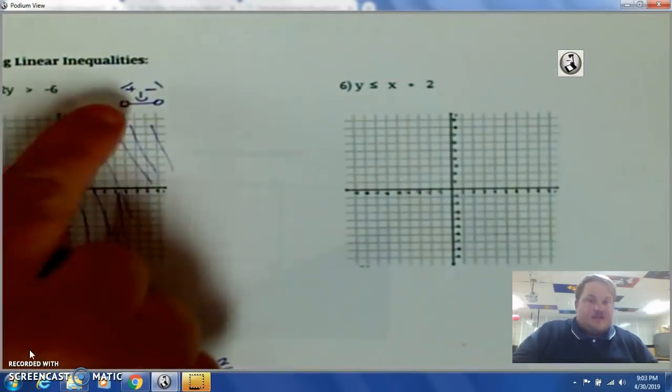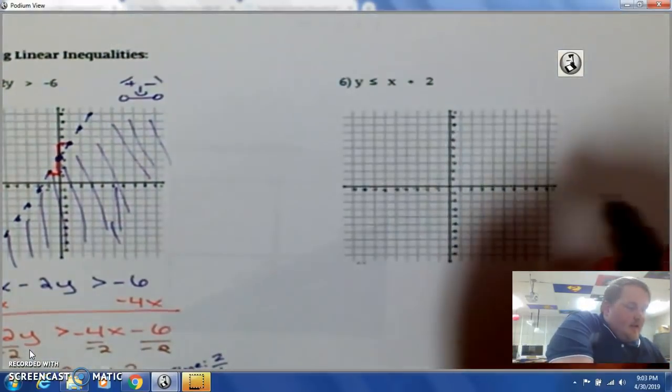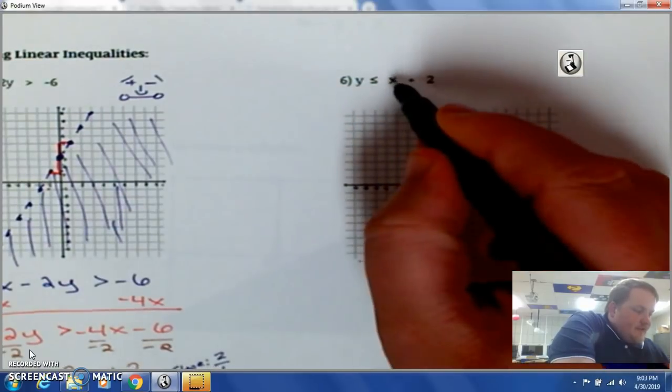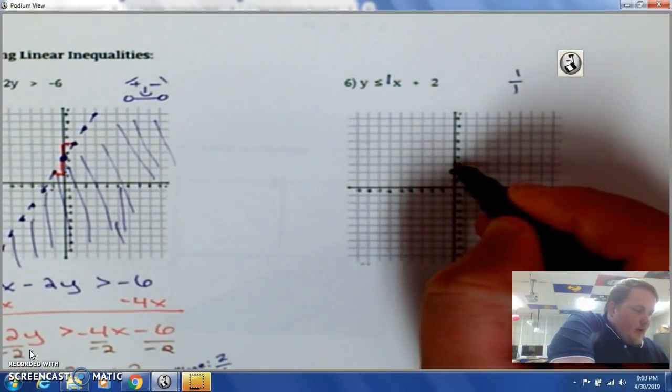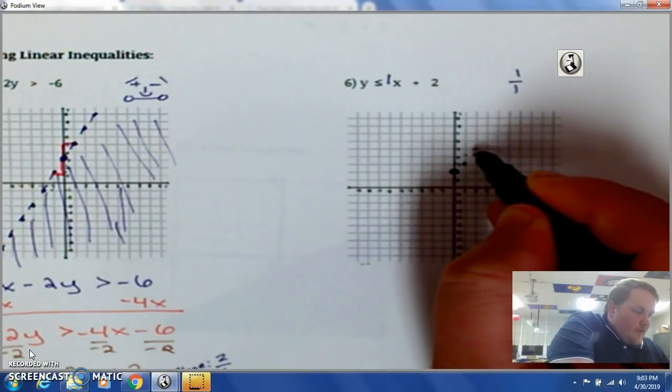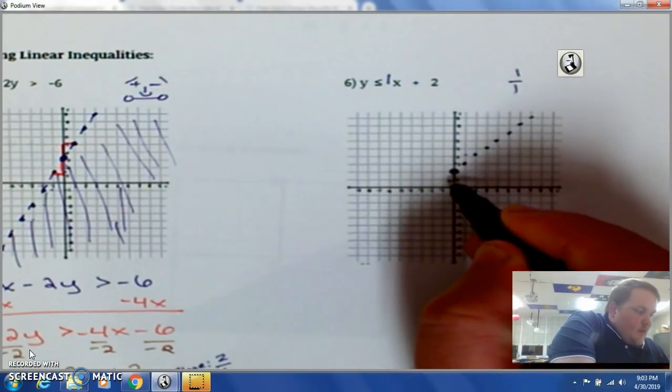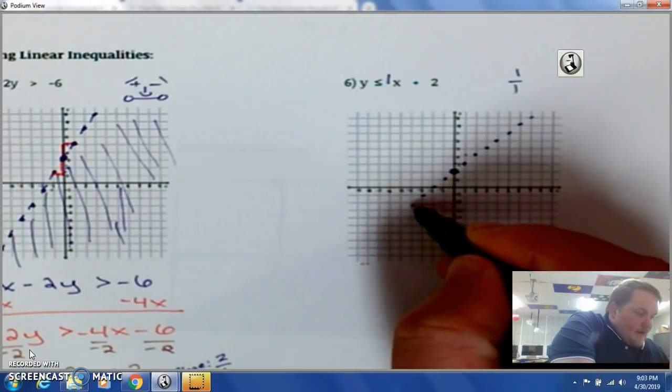This is a plus. If you can't see. But, you go up to 2. And, our slope. Since there's nothing in front of it. It's 1. So, it's 1 over 1. So, you go up 1 over 1. Up 1 over 1. Up 1 over 1. Or, down 1 over 1. In the positive direction. Because, your slope is positive.